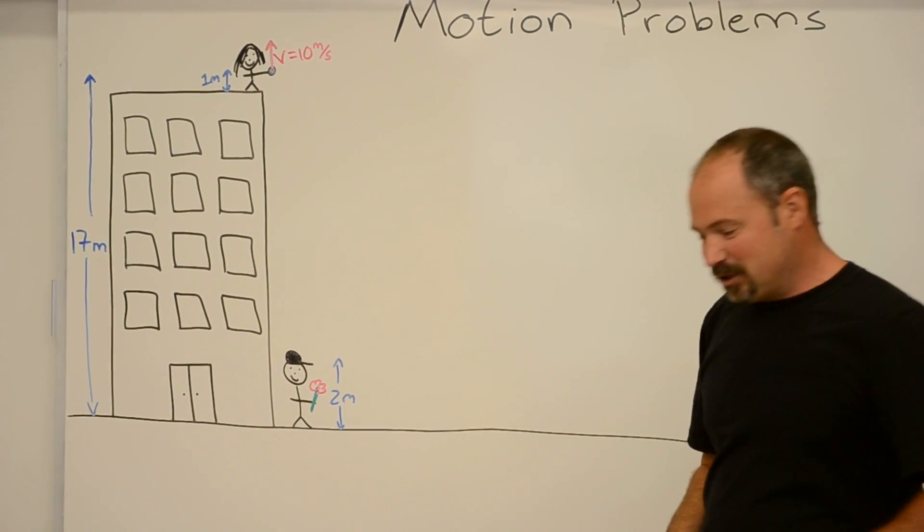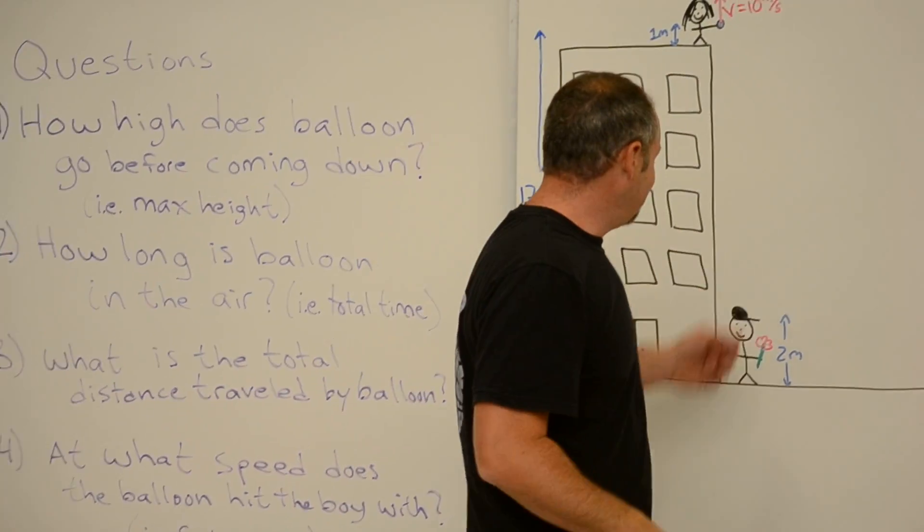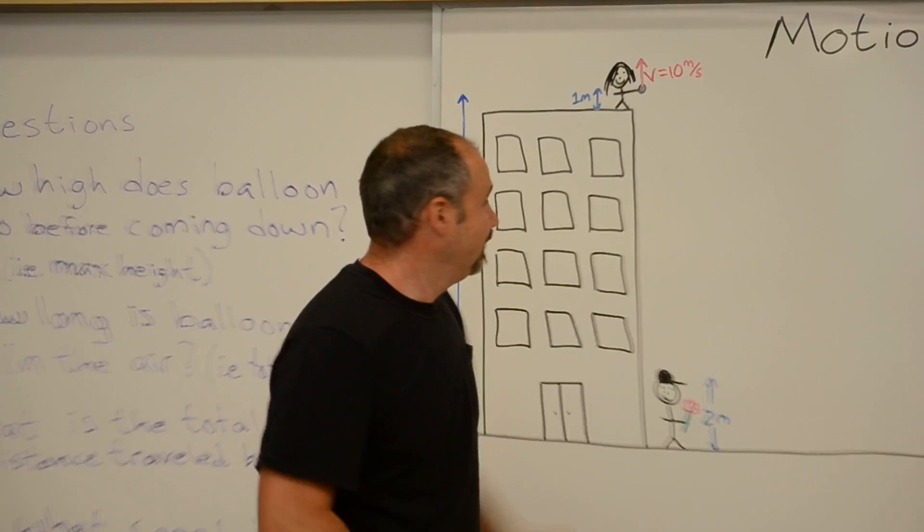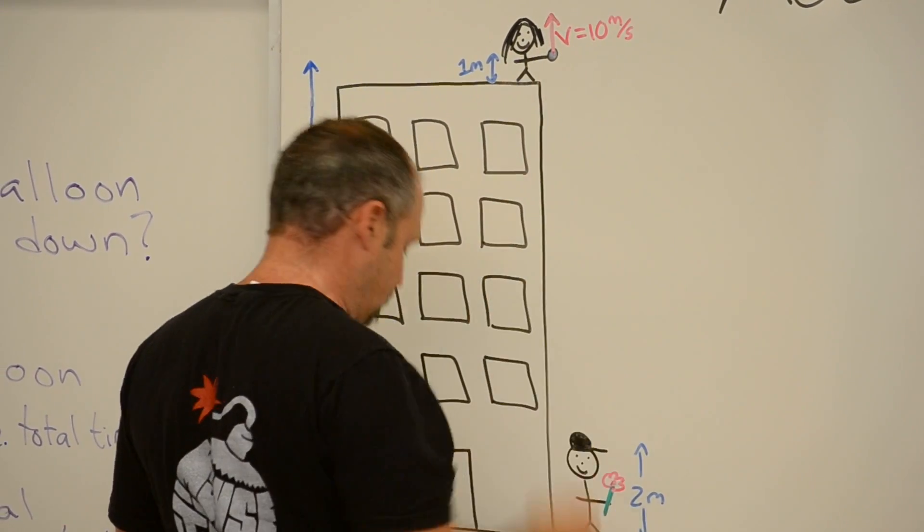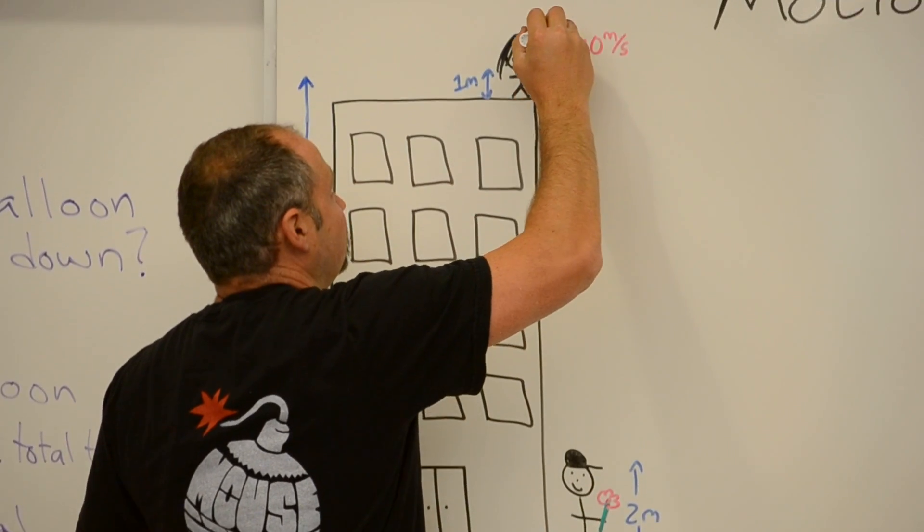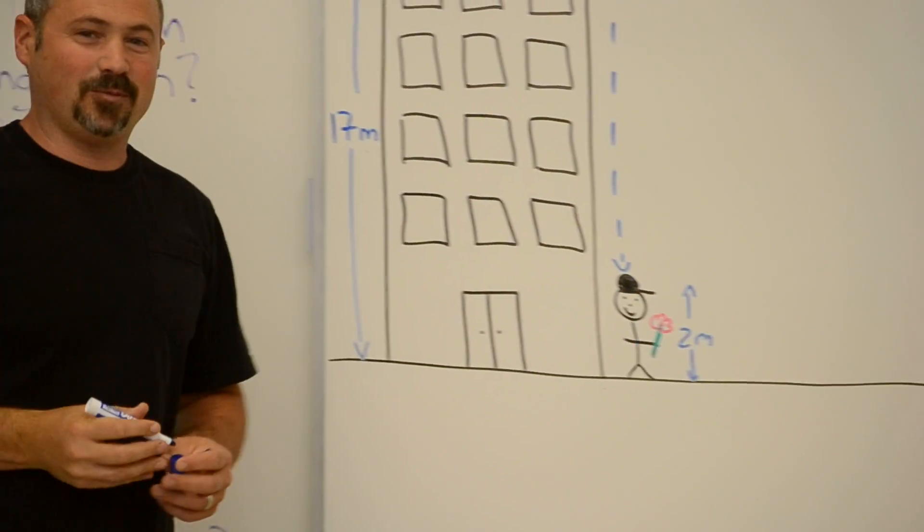And what she's going to do is she's going to throw it straight up in the air. This will hit his head with a higher velocity than if she had just dropped it. So she's going to throw it straight up in the air as fast as she can throw, which is 10 meters per second. And the balloon's path will look something like this and smack them right on the head.